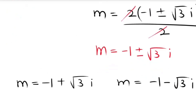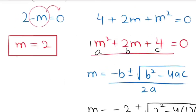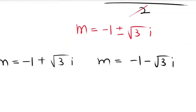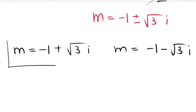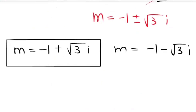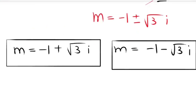So our final answers are: m equals 2, m equals negative 1 plus root 3 times i, and m equals negative 1 minus root 3 times i. Thank you so very much for watching my video.